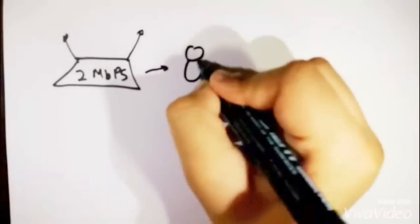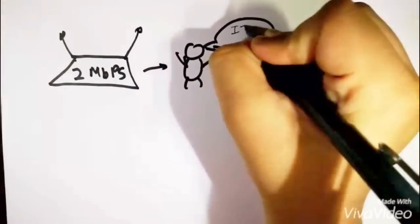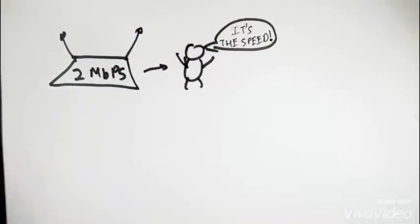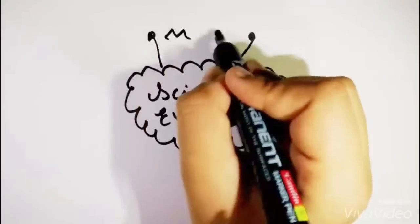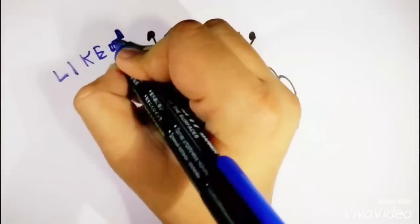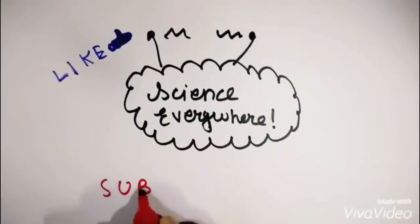So now you know what the megabits per second speed of your internet connection means and you also know the various types of band usages and where they are used. Thanks for watching Science Everywhere. If you learnt something new, give this video a like and also subscribe for some more awesome science.